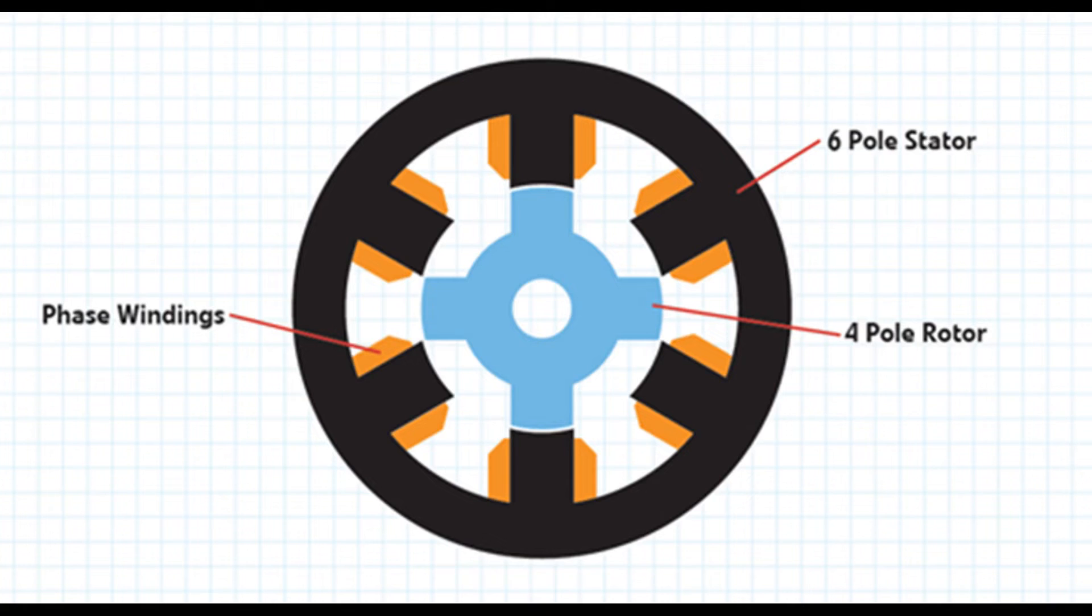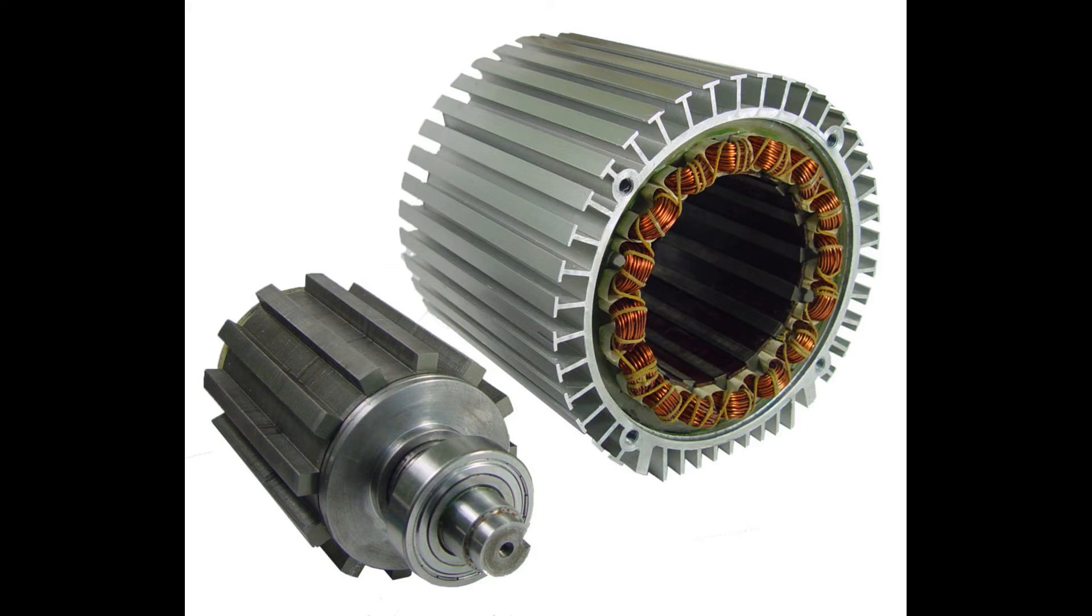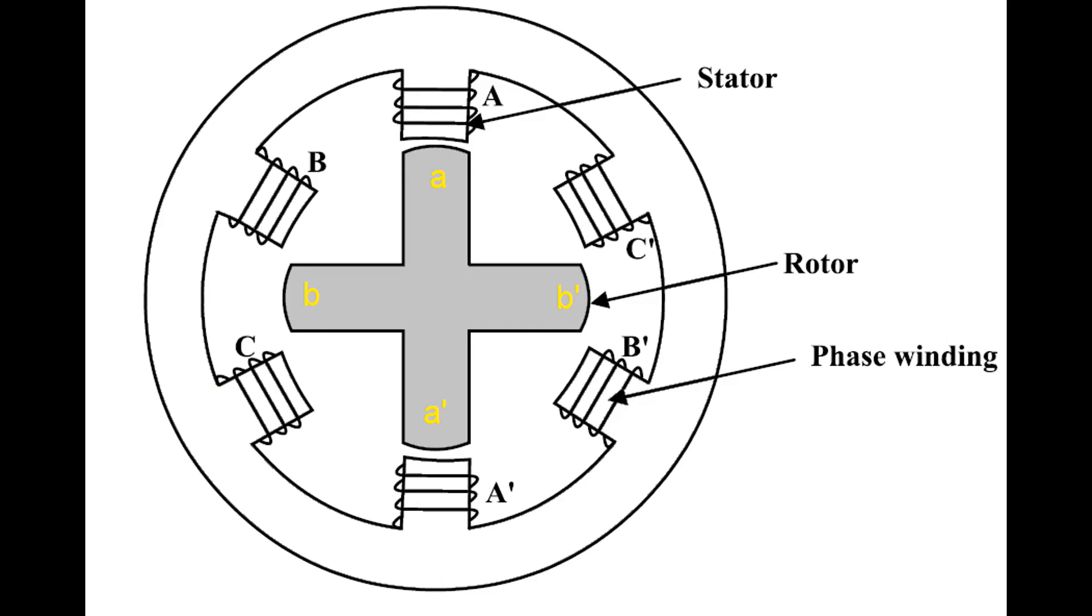Since the rotor consists of only one laminated core, the SRM motor is particularly good for very high speeds. The production of the switched reluctance motor is relatively simple, since windings can be pre-wound and only have to be pushed onto the teeth of the stator.